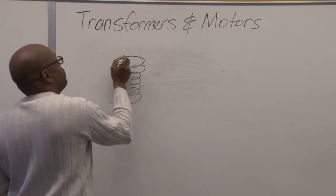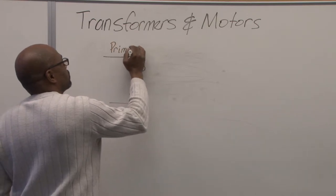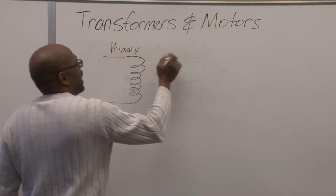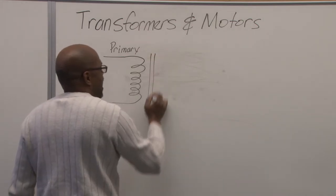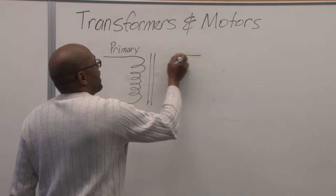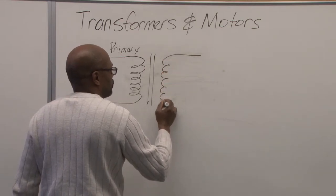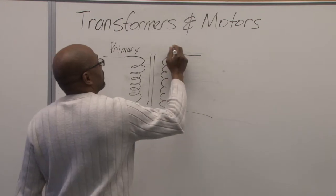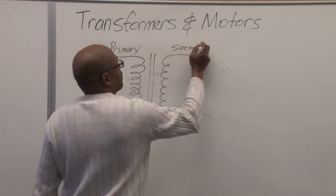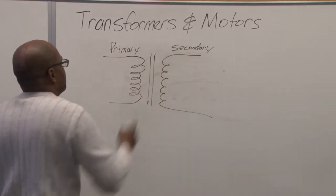And we have two sides of it. We have a primary side, and we have what we call an iron core or sometimes an air coil core, and we have a secondary side. Primary side, secondary side.